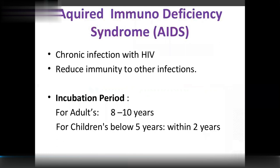Acquired Immunodeficiency Syndrome (AIDS) is a chronic infection with HIV, which reduces the body's immunity to other infections. The incubation period is 8 to 10 years; for children below 5 years, it is within 2 years.